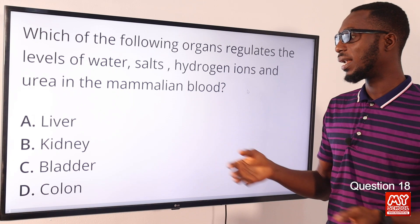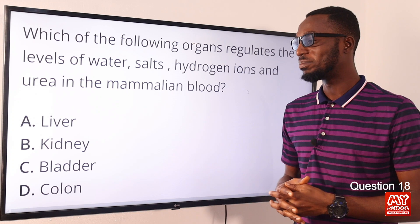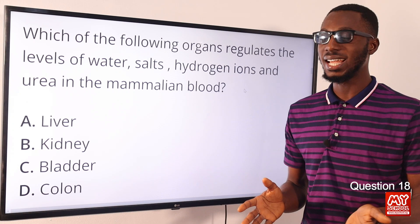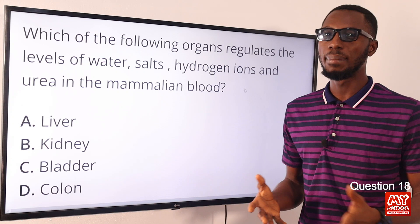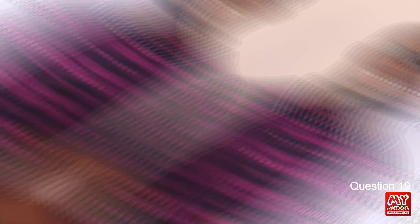The bladder is of course a structure associated with the kidney - that is where urine is stored. The colon, also called the large intestine, is concerned with eliminating waste from the body - the storage and elimination of faeces generally. So the correct option here is option B for kidney.